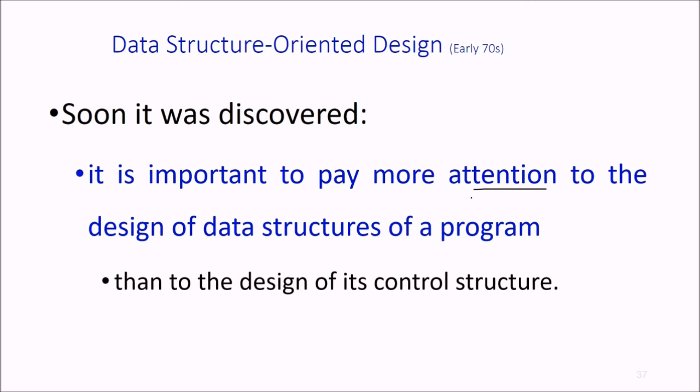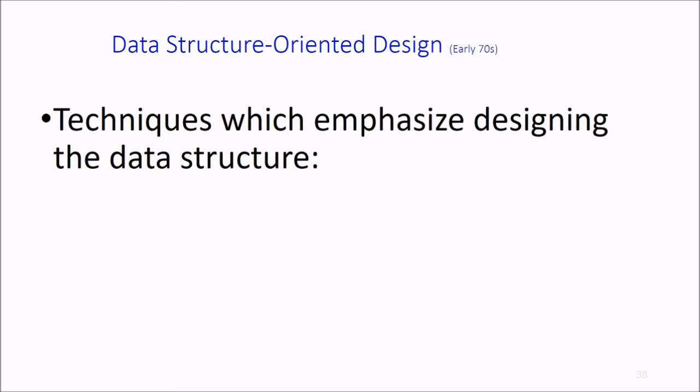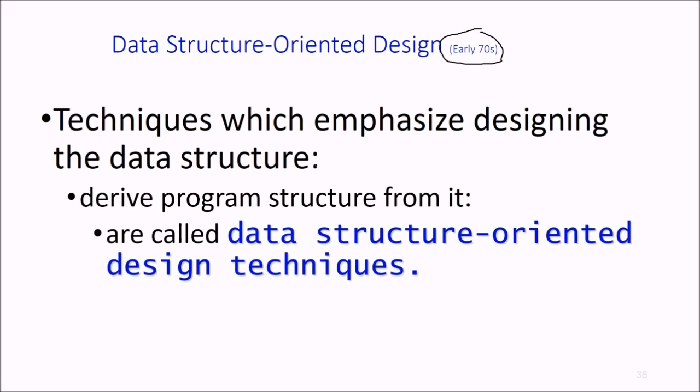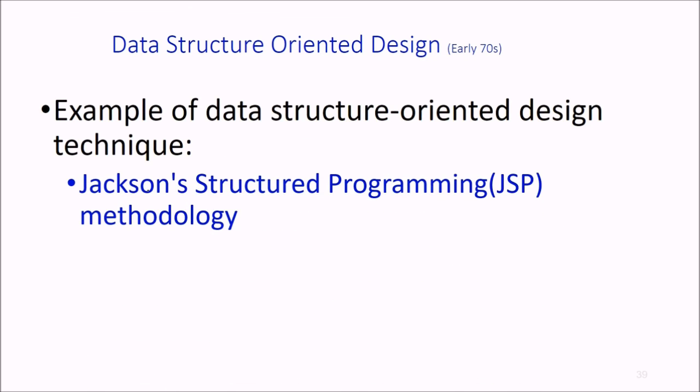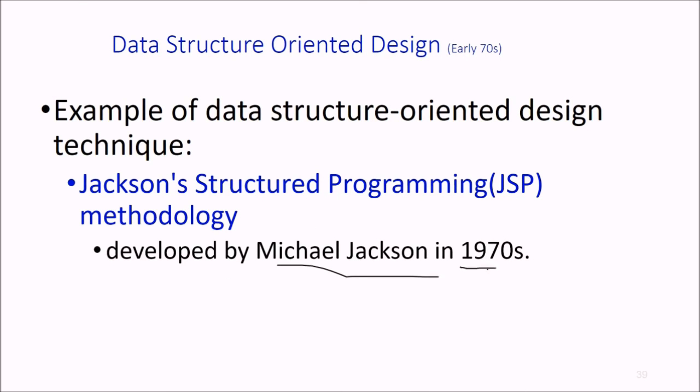In the early 70s, it was discovered that it's important to pay more attention to the design of data structures of a program than to the design of its control structure. Techniques emphasizing designing the data structure and deriving program structure from it are called data structure-oriented design techniques. An example is JSP—Jackson's Structured Programming methodology, developed by Michael Jackson in the 1970s.